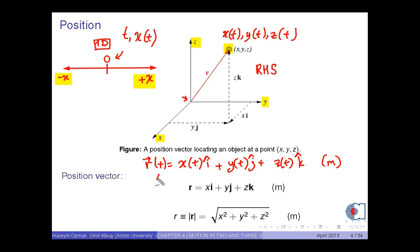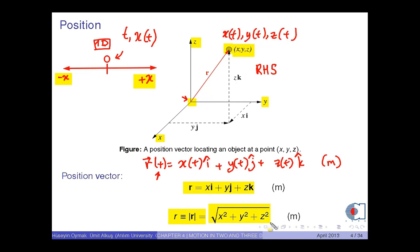For the sake of clarity, we don't write t, and we denote the position vector as vector r equals x i plus y j plus z k. The magnitude of the position vector, whose tail is at the origin and whose head is at the point x, y, z, is calculated by applying the Pythagorean theorem twice, giving the magnitude of vector r as the square root of x squared plus y squared plus z squared, in meters. This is the distance between the origin and the position of the object.